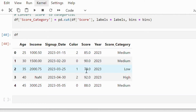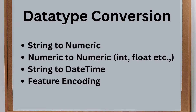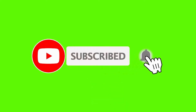As you can see, we have successfully converted the numerical column into categorical. So today we covered various data type conversions including string to numeric, conversion between numeric types, string to datetime, and conversion between categorical and numerical formats. These conversions ensure that our data is in the right format for analysis and modeling. If you like this video, please subscribe to my channel and see you in the next video.